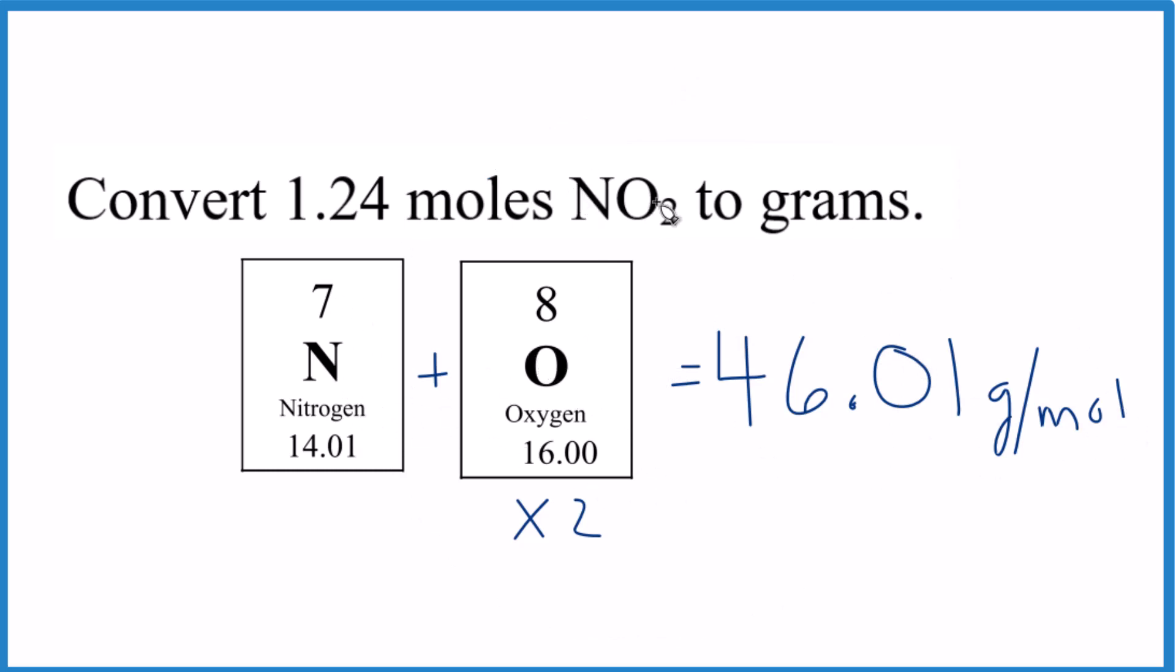We have one nitrogen and two oxygen. So we multiply the oxygen by two, add 14.01. That's where this came from. And remember the units. Give it a try. Convert the moles to grams here.